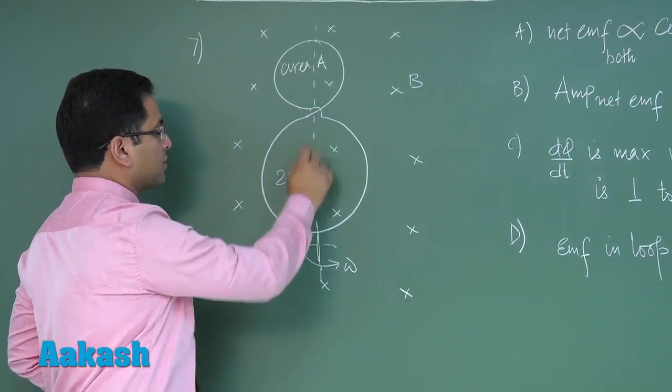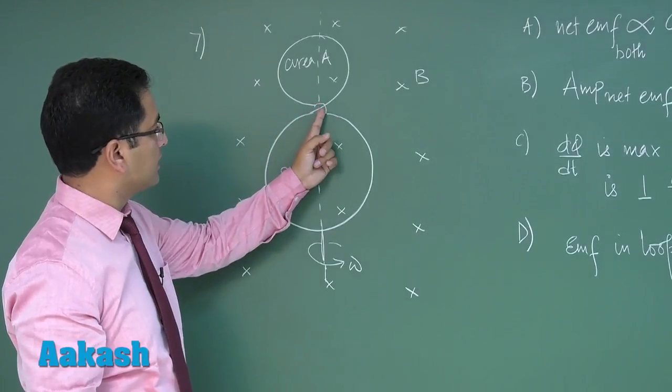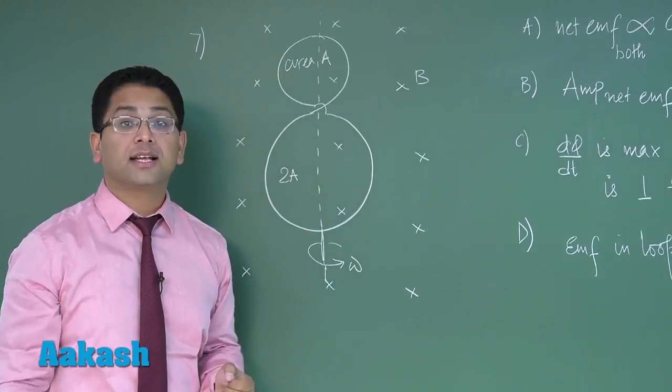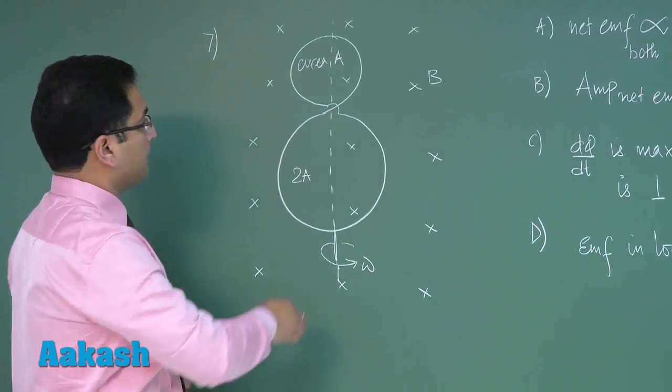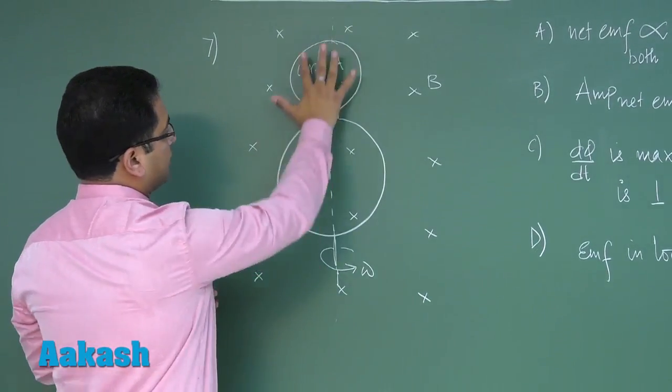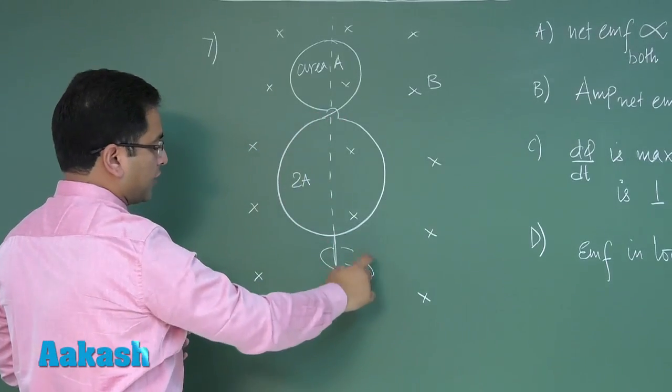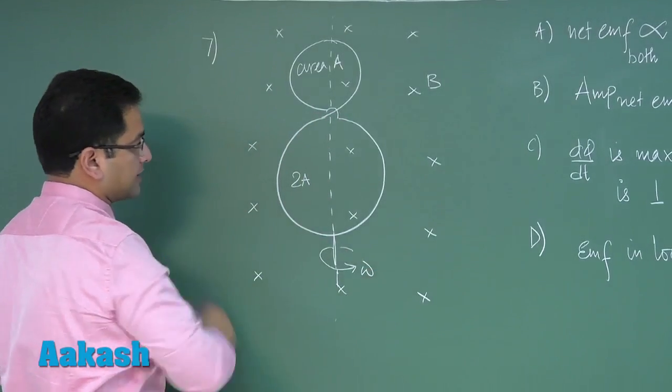A kink has been shown here, meaning this wire and this wire are electrically insulated with no connection. There is a vertical axis and this particular arrangement rotates with rotational angular velocity omega.